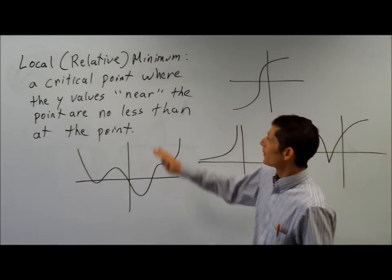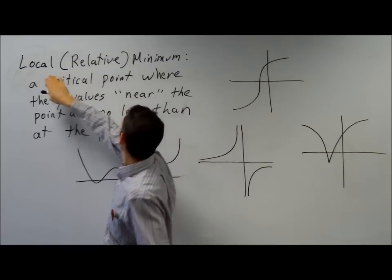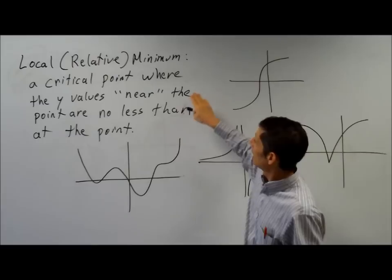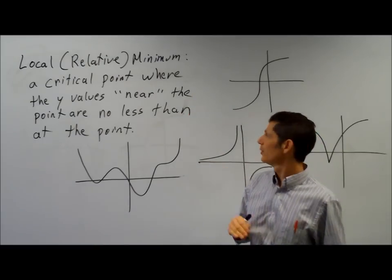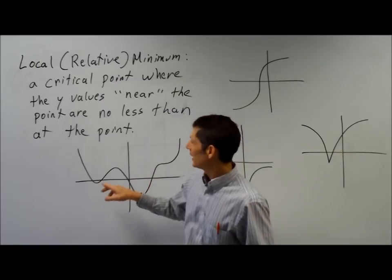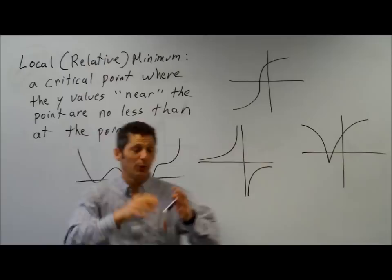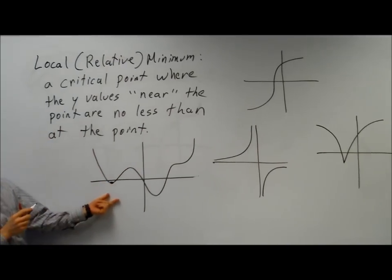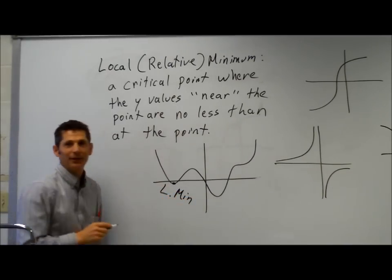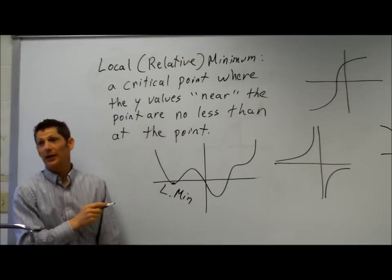Here's the second term: a local or relative minimum. You might hear both these terms used. These are critical points where the y-values near the point are no less than at the point — really it just means a local or relative minimum is the lowest point in its area. Right here this satisfies that condition. It's a local minimum, or L-min. If I take a step on either side, I'm going uphill.